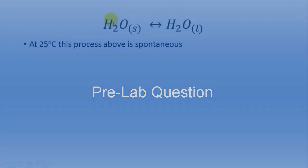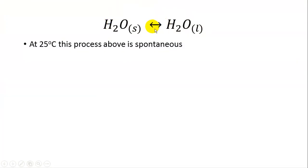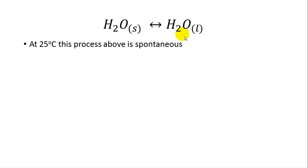A pre-lab question asks: if you take an ice cube at 25 degrees, what's going to happen? Just in real life, take an ice cube and leave it out at 25 degrees — you will see automatically that the ice will turn into liquid water. That is spontaneous. A spontaneous process just happens naturally; there is no intervention needed for the reaction to occur. We're not worried about the time or the rate — it's just going to happen on its own, whether it takes days or years. This process is spontaneous.